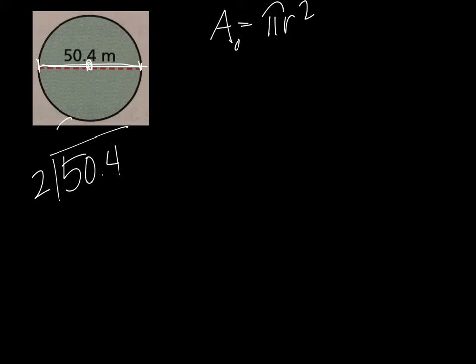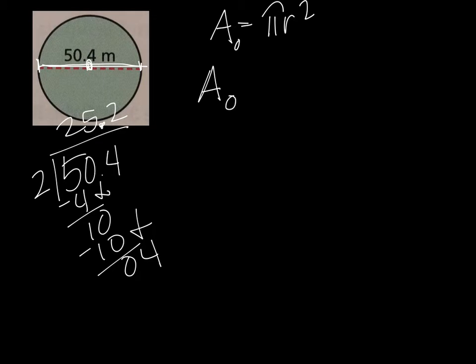They gave us the diameter. They went from one side through the center to the other side. So you have to start off by dividing that by 2 because really it's the same as there are 2 radii that add up to a diameter. So if I take 50.4 divided by 2, I'd get 25.2. So the area of my circle is going to equal pi times 25.2 times 25.2 because it's radius squared.